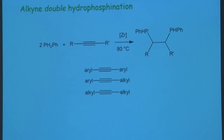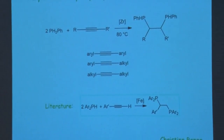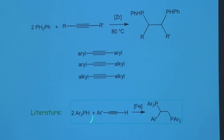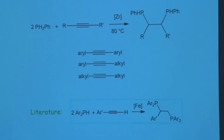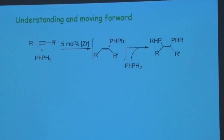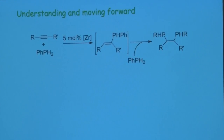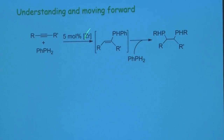This is not an unknown transformation — as of this year it is the third report of it. The first report comes from Nakazawa and co-workers, who showed with iron they could make diphosphines as well. What's important is how complementary these two systems are: the iron case only works for terminal alkynes whereas we only do internal alkynes, so together we've covered the whole set of triple bond carbon. Also, Nakazawa's chemistry is exclusively with secondary phosphines. The reaction proceeds sequentially — first a vinyl phosphine intermediate, then the second phosphine comes in.